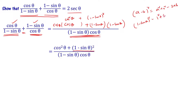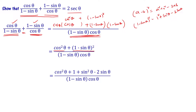Expanding the numerator, we write cos²θ plus (1 − sinθ)² which gives cos²θ plus 1 minus 2sinθ plus sin²θ, all divided by (1 − sinθ) into cosθ.